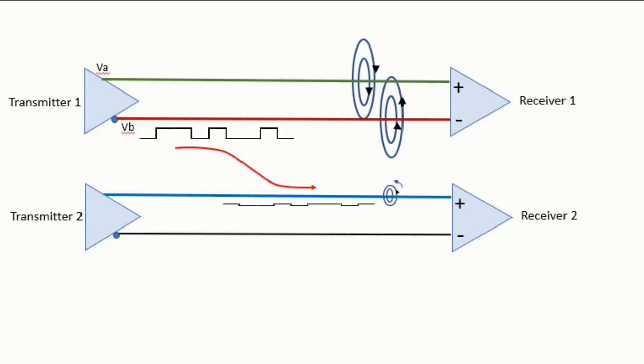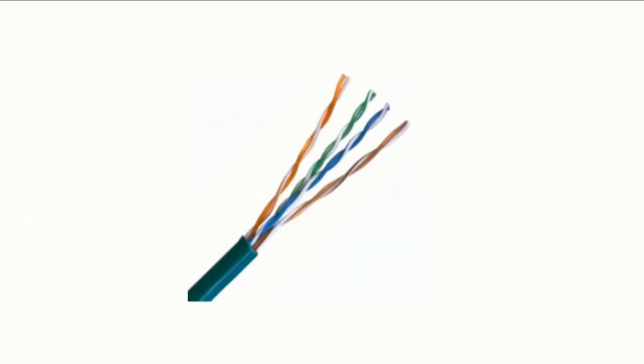So far we have seen why we have a pair of conductors for each data transmission in ethernet cable or voice transmission in telephone lines, but we have not seen why they are twisted, and that's what we will see next.